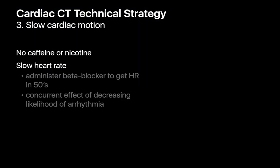Besides doing CT scanning as fast as possible and applying cardiac gating, the final arm of our strategy is to keep the patient's heart rate as low as we can. In addition to asking patients to abstain from caffeine and nicotine before their scan, we can administer beta blockers, which not only bring heart rate down but also decrease the likelihood of arrhythmia.